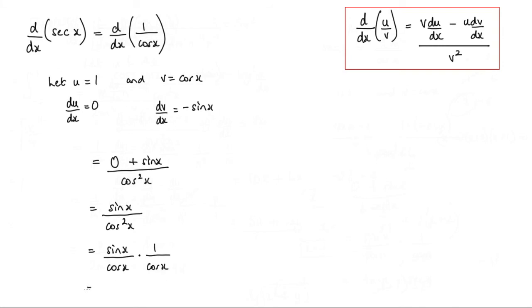Now we know that sin x over cos x, well that's tan x. And 1 over cos x, well we know from the start that that is sec x. So what we have is sec x tan x.